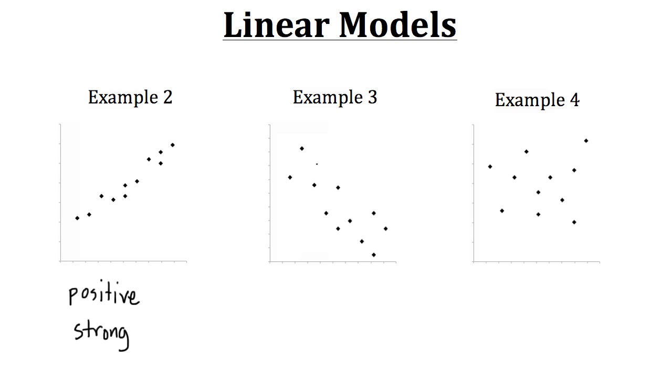Now similarly with example three here, it looks like our various data points have a decreasing type of trend. This is known as a negative trend. Now with this it seems like the points are not quite as close. So it looks like there's kind of a line there, but it's not as defined as example two was. So in this case we could call it a weak negative trend.